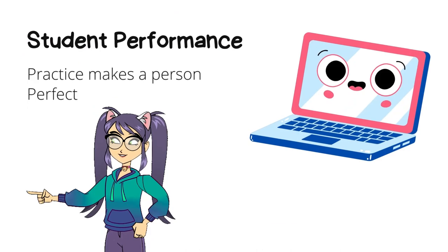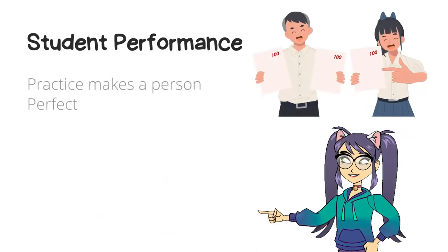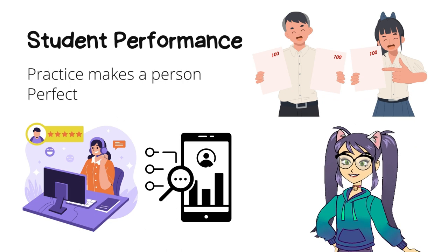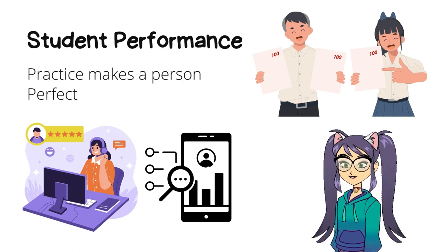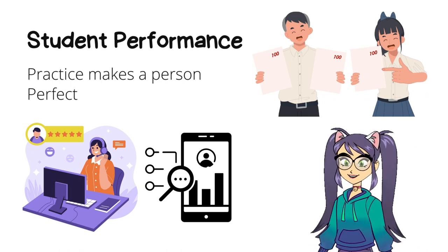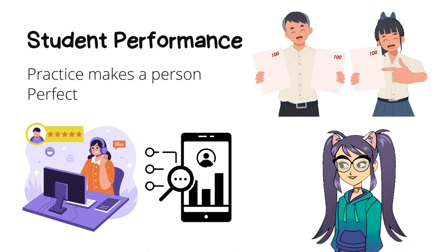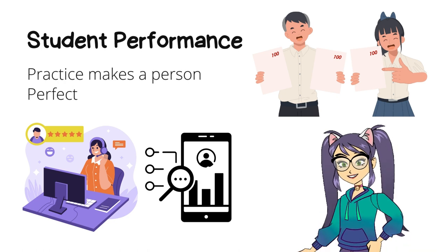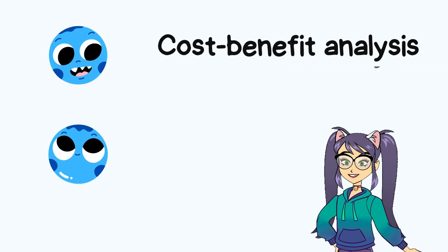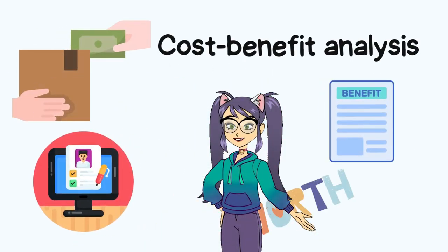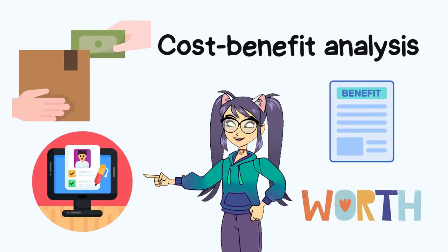Student performance: Student performance can be tracked over time to see how e-assessment and feedback are impacting their learning. This can be done by looking at student grades, test scores, and other measures of academic achievement.